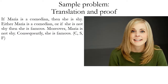Now let's look at another sample problem involving translation and proof. If Maria is a comedian, then she is shy. Either Maria is a comedian, or if she is not shy, then she is famous. Moreover, Maria is not shy. Consequently, she is famous.